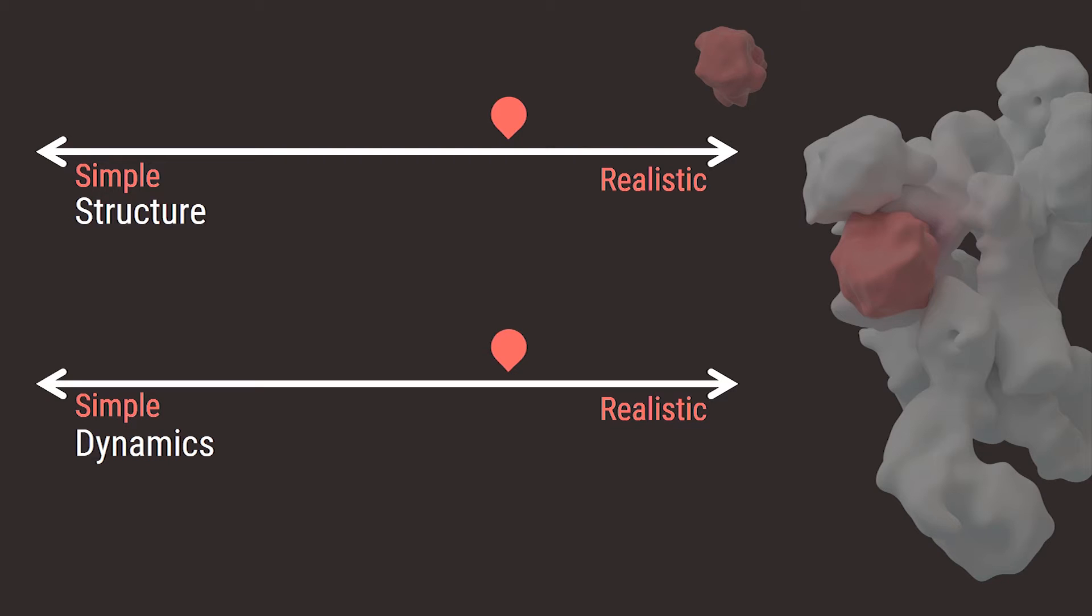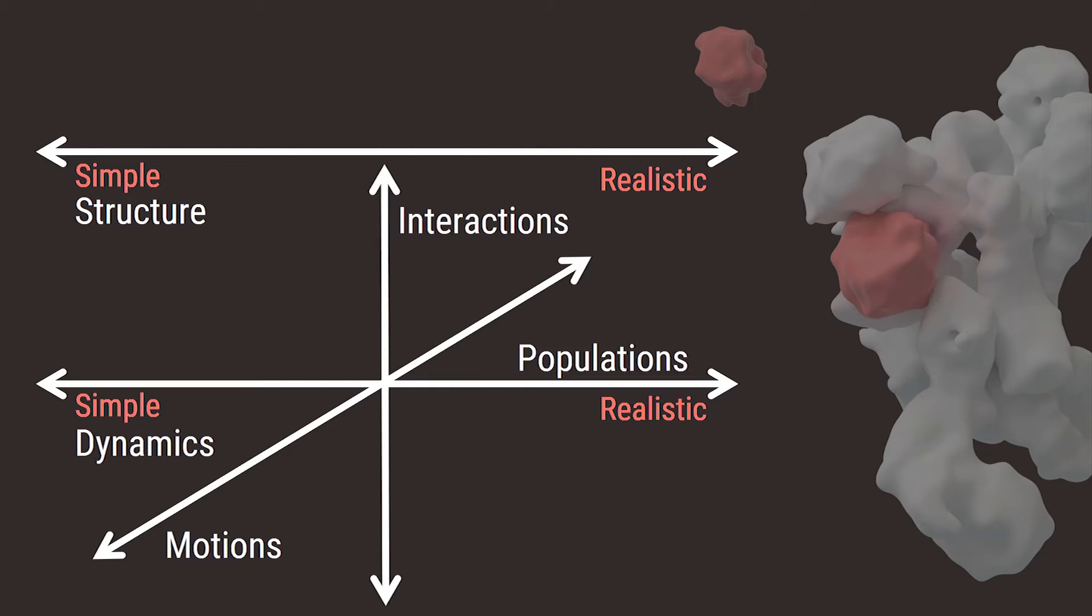Some qualifiers here: realistic is not always better, and in fact structure and motion don't necessarily need to be aligned across this realism spectrum, although I think there's an argument to be made for that. And rather than a single spectrum, dynamic information involves lots of decisions across many axes, including information pertaining to motions, interactions, and populations.